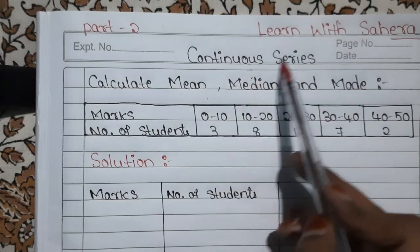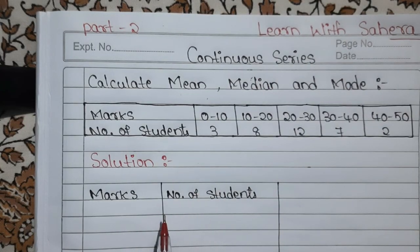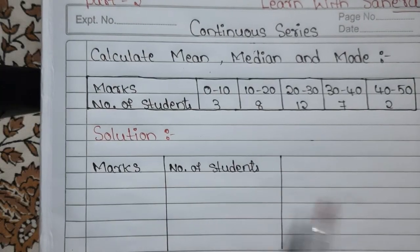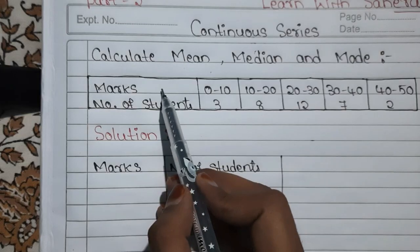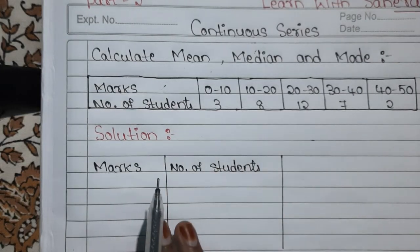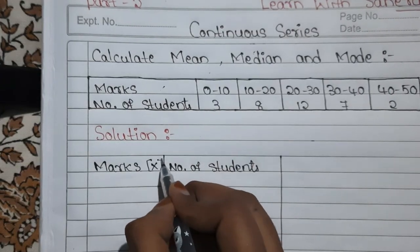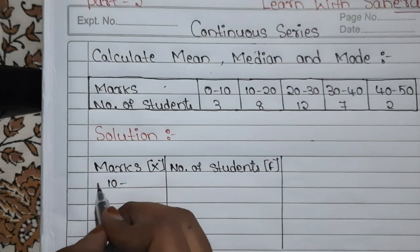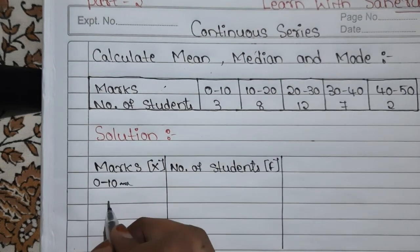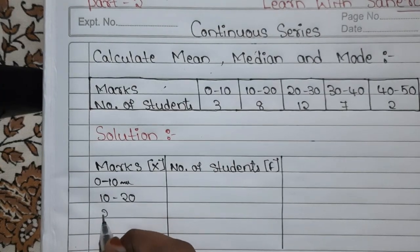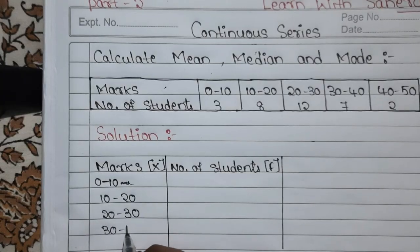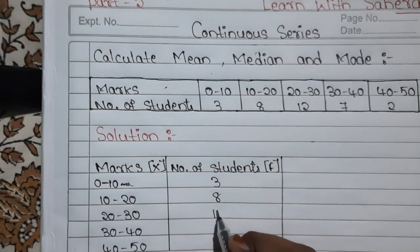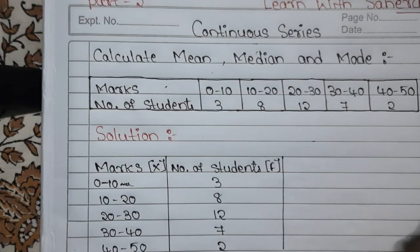First we will calculate mean, then median, and finally mode. Whatever is given in the question, you have to take it. We have a marks column and a number of students column — take marks as x and number of students as f. The marks are: 0–10, 10–20, 20–30, 30–40, 40–50. The number of students are: 3, 8, 12, 7, 2.